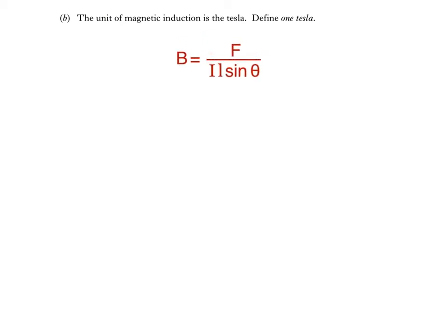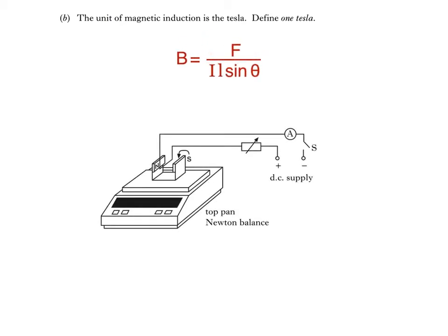You've maybe seen this experimental setup before, which allows you to investigate the factors affecting the force experienced by a current carrying conductor in a magnetic field. Let's imagine that the conductor was placed, as shown in the diagram, so that it was perpendicular to the magnetic field. This would mean that theta is 90 degrees, and therefore that sine theta would equal 1. If the current in the conductor was 1 amp, the length of the conductor in the magnetic field was 1 metre, and the conductor experienced a force of 1 newton.